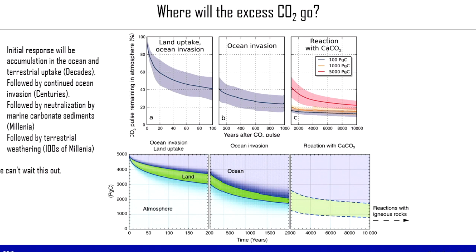Where is the excess CO2 going? Initially there's a land uptake response, and we're seeing that. The ocean invasion response will last a little longer than terrestrial uptake. Then, on longer time scales, we'll get to long-term weathering reactions. The ocean signal will continue for a few centuries based on ocean mixing and turnover time. The next important reaction is with carbonate sediments, then ultimately with primary minerals — timescales ranging from decades to hundreds of thousands of years. There are natural processes that will absorb the CO2 pulse, but not on congressional timescales. We can't wait this out.